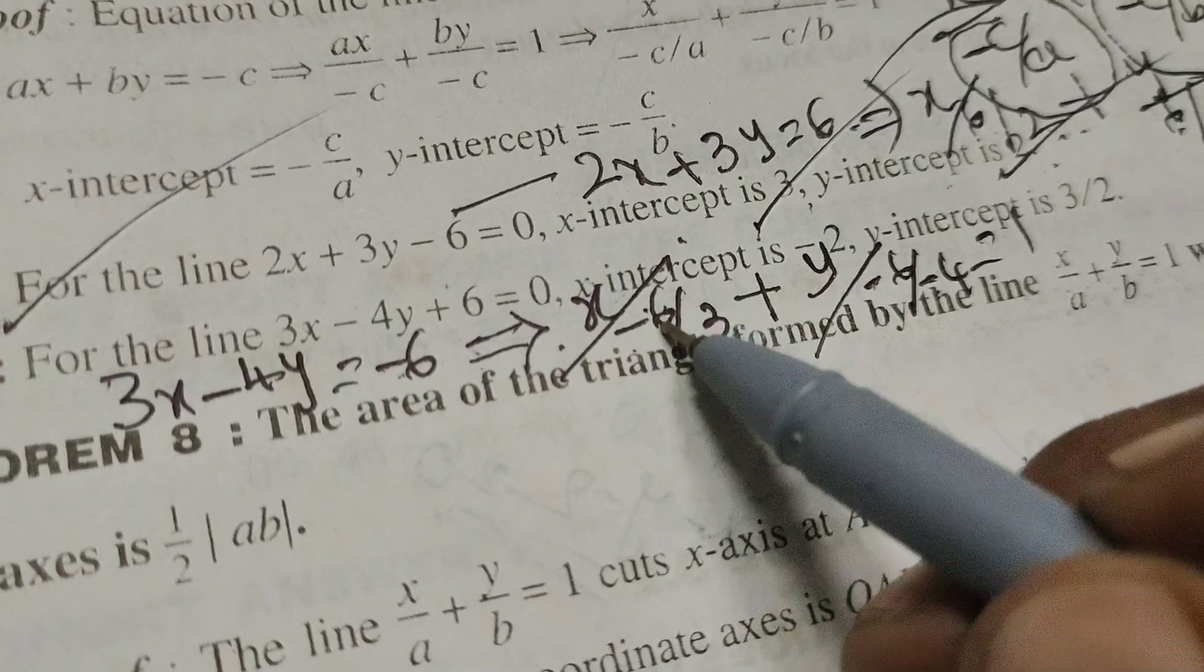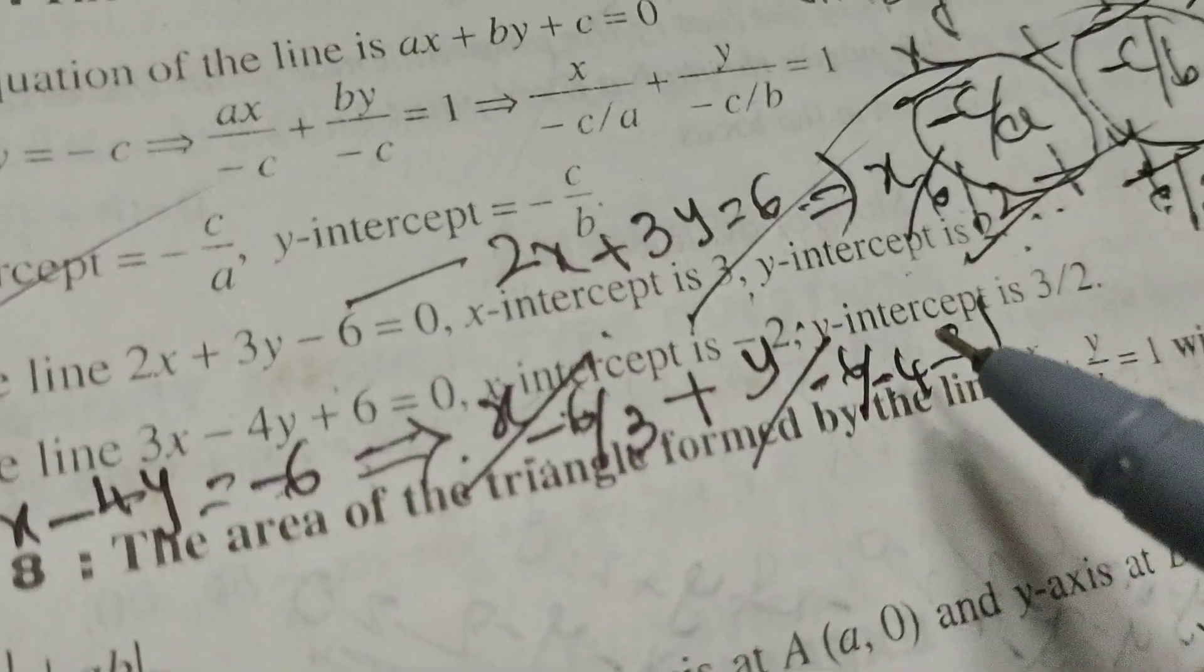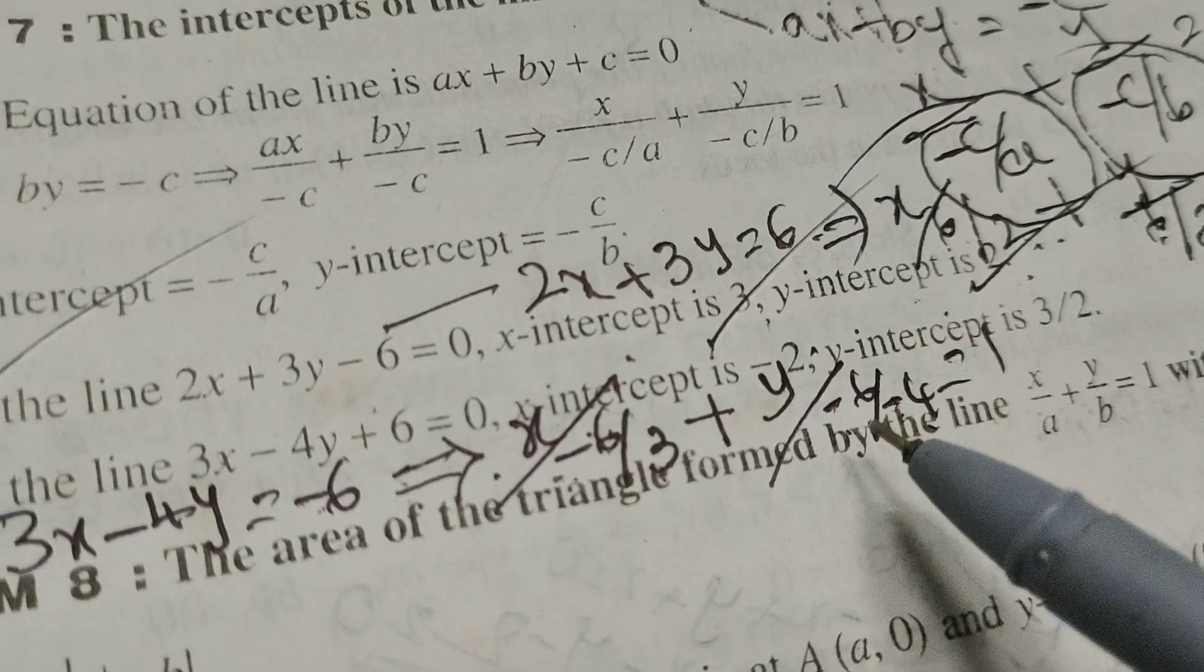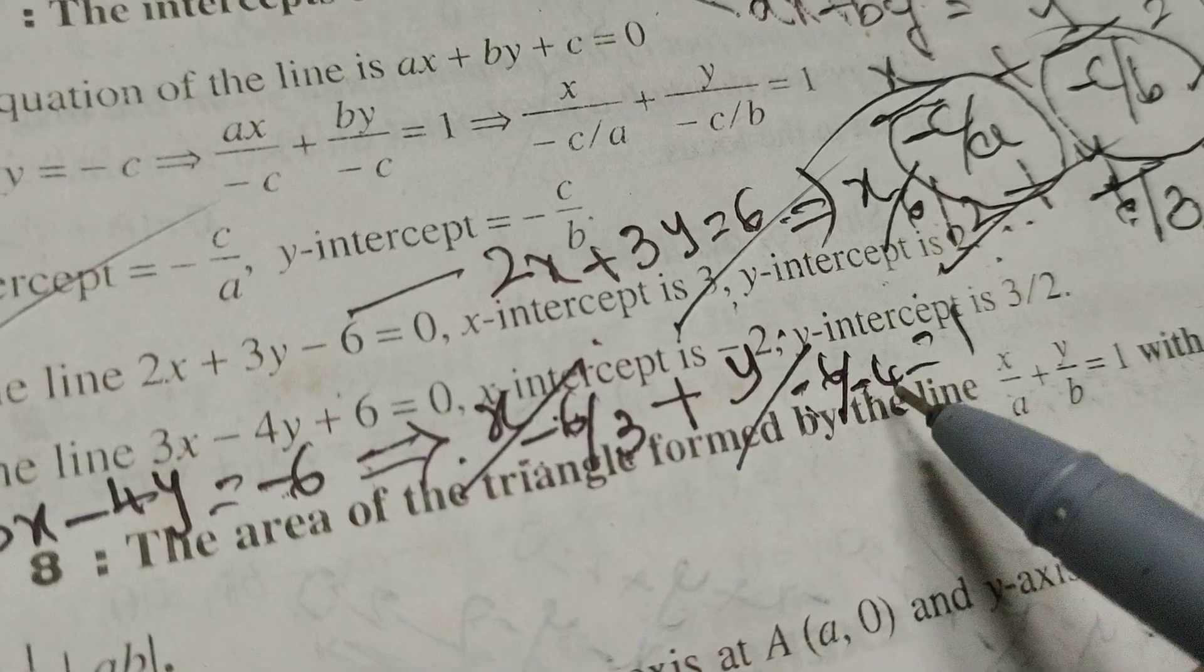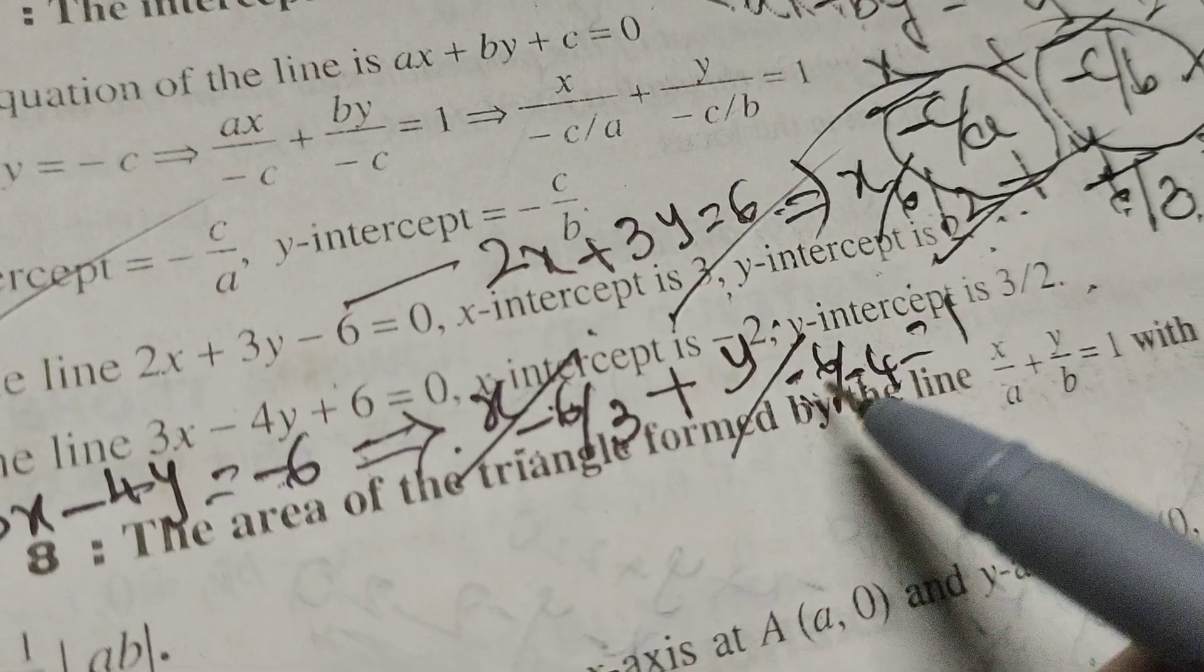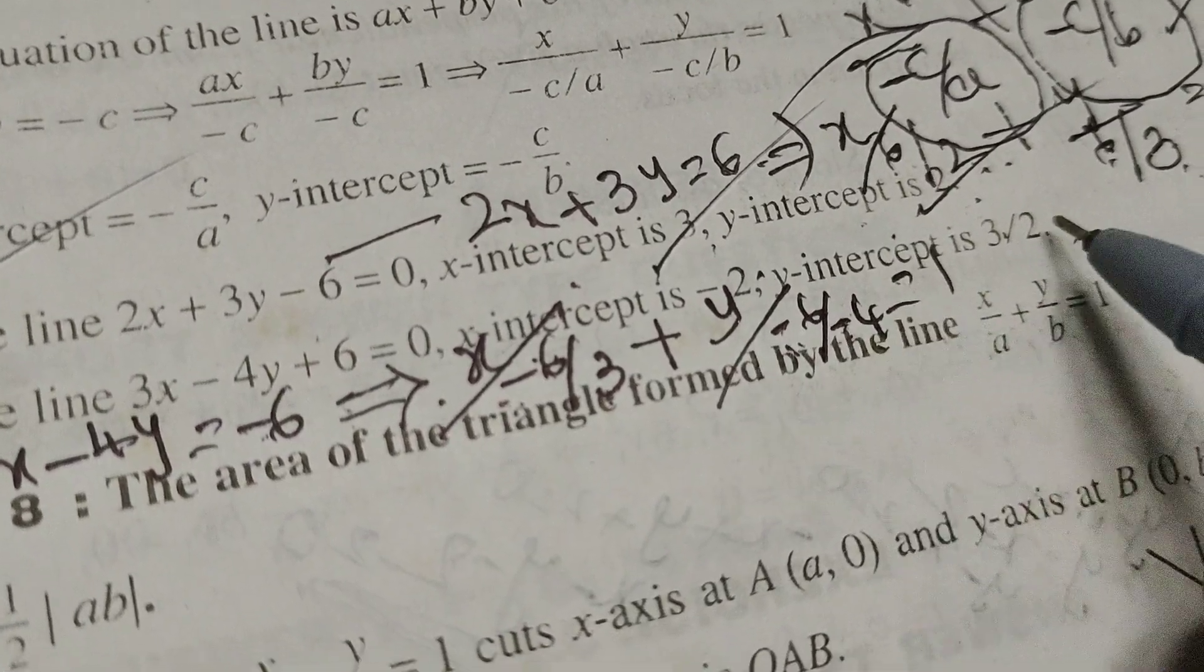3 goes into 6 twice, giving minus 2. And y-intercept means minus 6 by minus 4, minus times minus gets cancelled. Next, 2 goes into 4 twice, 2 goes into 6 three times, this is the y-intercept.